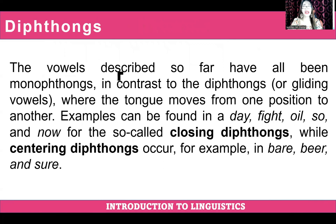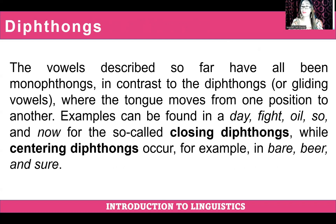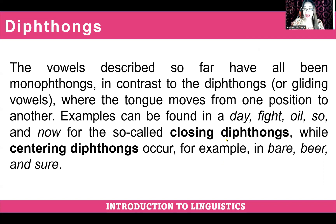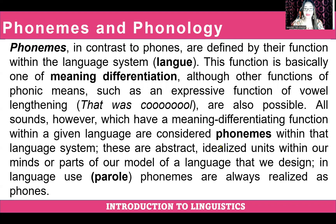Let's now have diphthongs. The vowels described so far have all been monophthongs, in contrast to diphthongs or gliding vowels, where the tongue moves from one position to another. Examples of closing diphthongs include day, fight, oil, sew, and now. Centering diphthongs occur, for example, in bear, beer, and sewer. These diphthongs, also known as gliding vowels, were also discussed in our face-to-face meeting as part of our alphabet sounds.